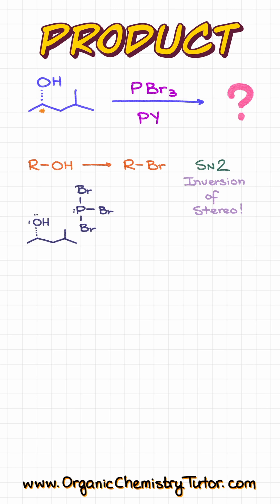The way this reaction is going to work: first, oxygen is going to attack phosphorus, which is relatively electrophilic, and kick one of those bromides out, making the following intermediate.